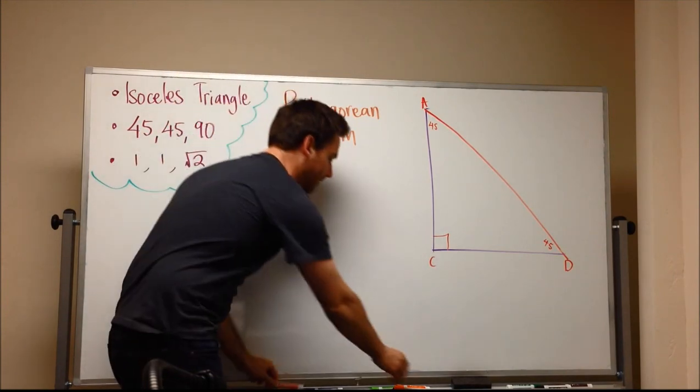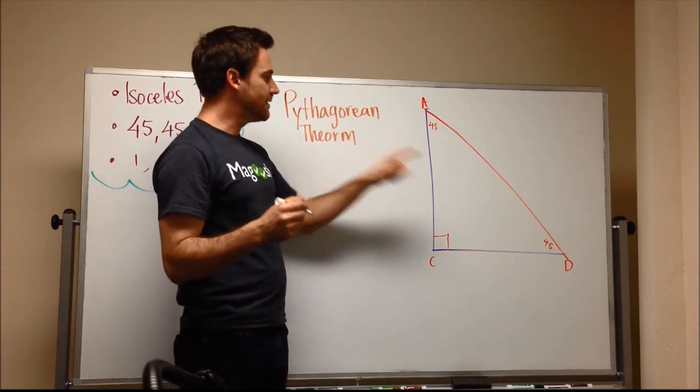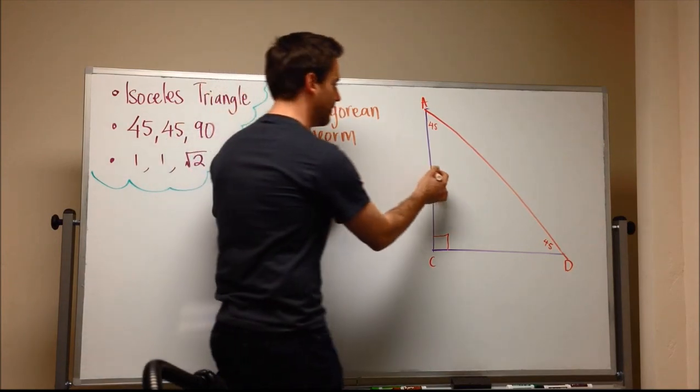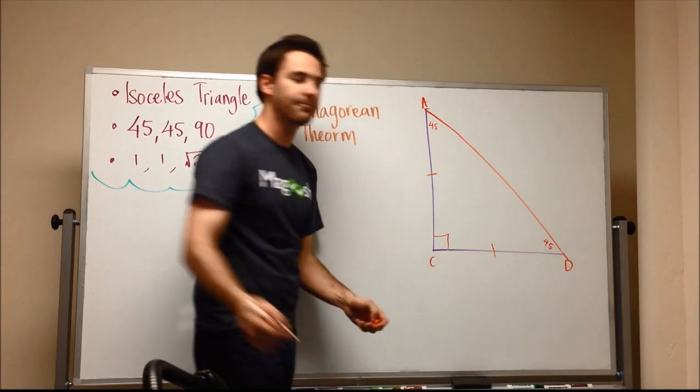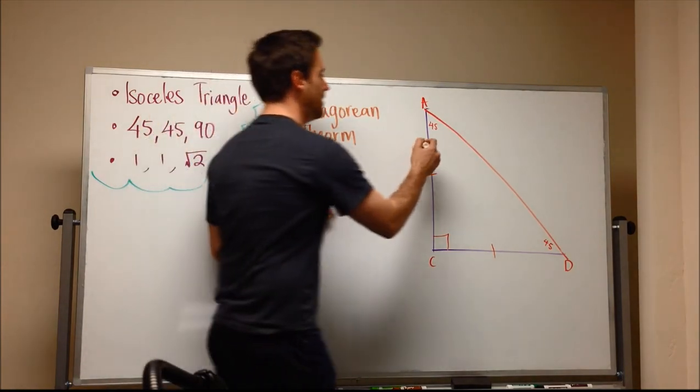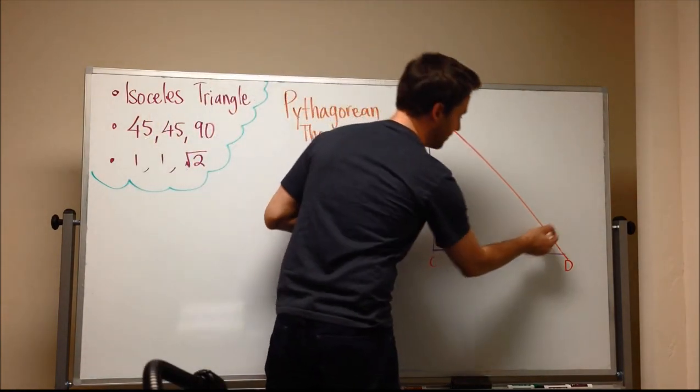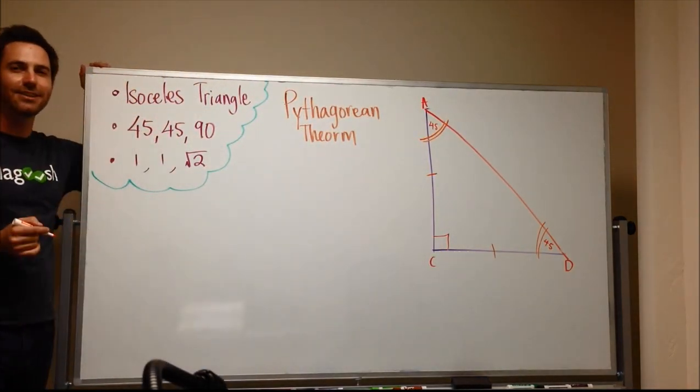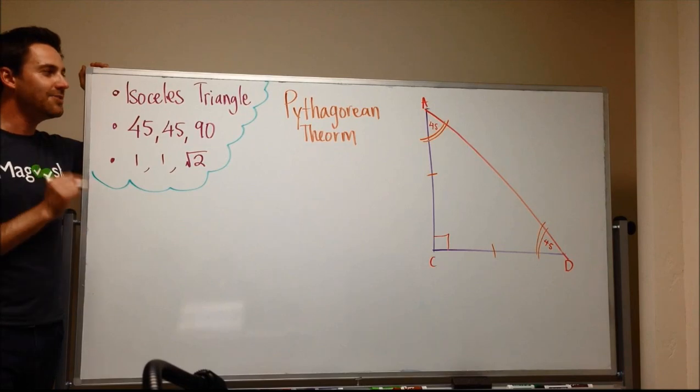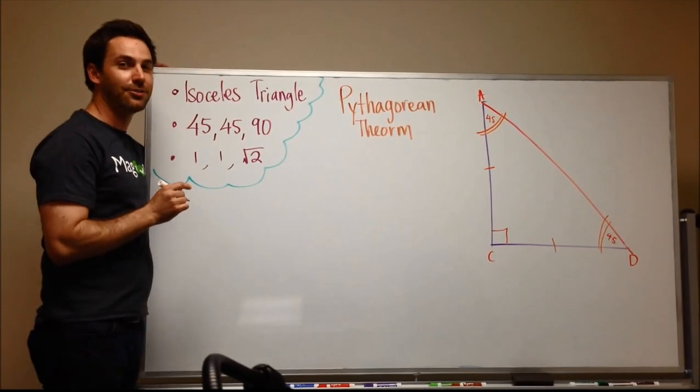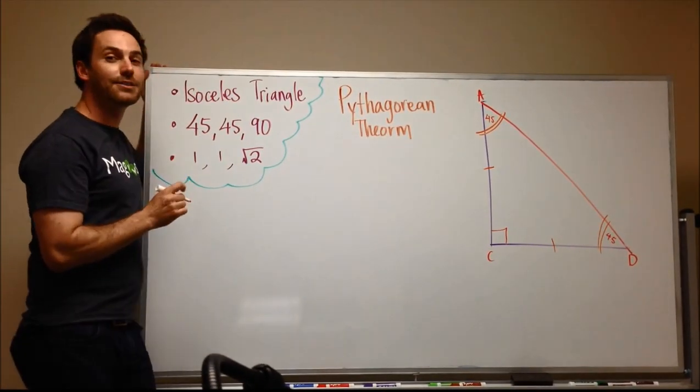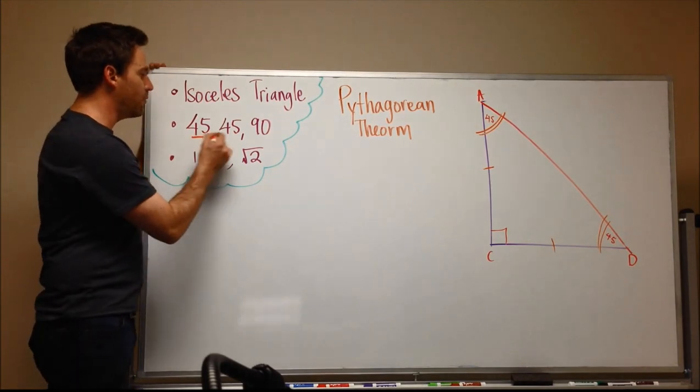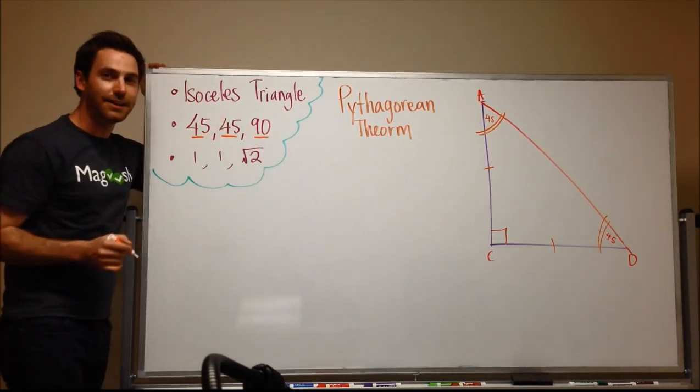Two things of note. One. Since this was a square, both sides are equal. So this side is equal to this side. And this angle is equal to this angle. That is the definition of an isosceles triangle. Now this is a very special isosceles triangle because it was derived from a square and thus a 45, 45, 90 degree triangle.